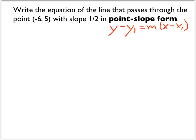In order to write the equation of a line in point-slope form, we need a point, which we have, and a slope, which we also have. So let's rewrite those.